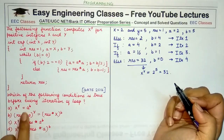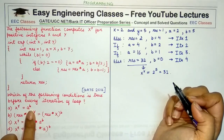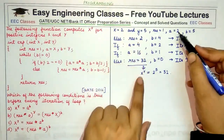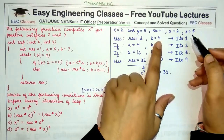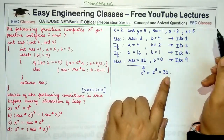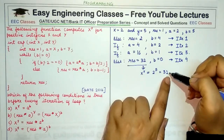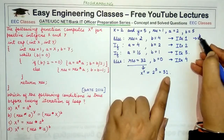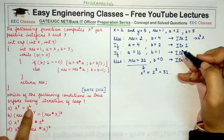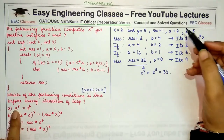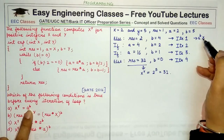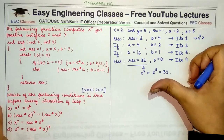Let's check if the final result equals a raised to power b after every iteration. After the first iteration, a is 2 and b is 4, so a^b = 2^4 = 16, which is not equal to 32. So a^b = x^y does not hold true — it fails in the first iteration itself. We will not check this option further.